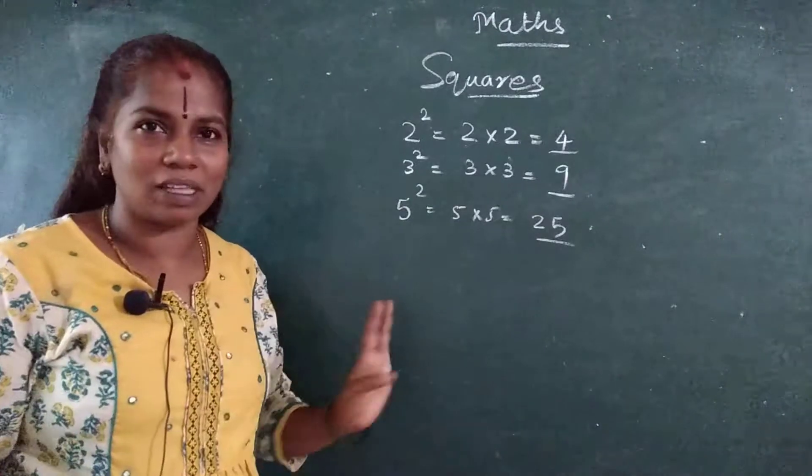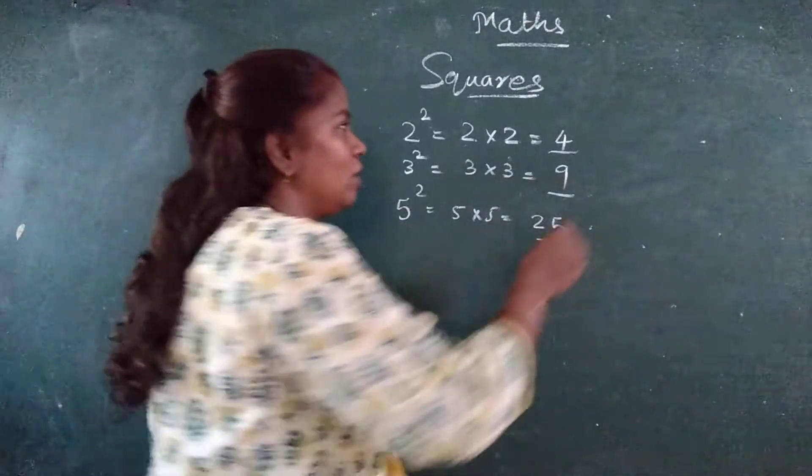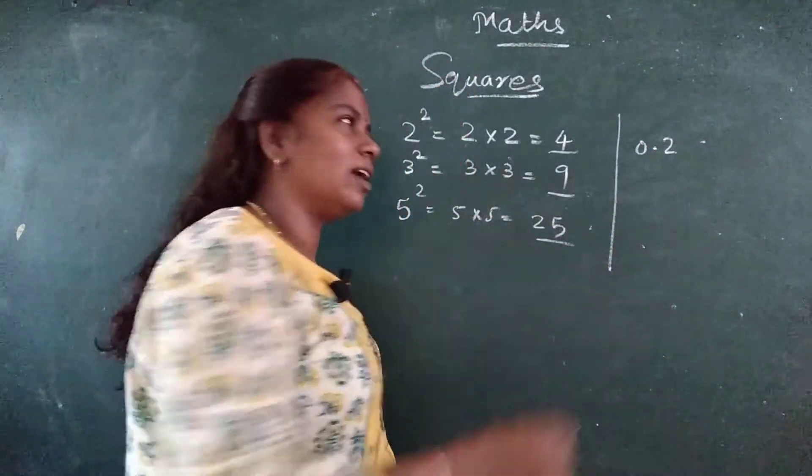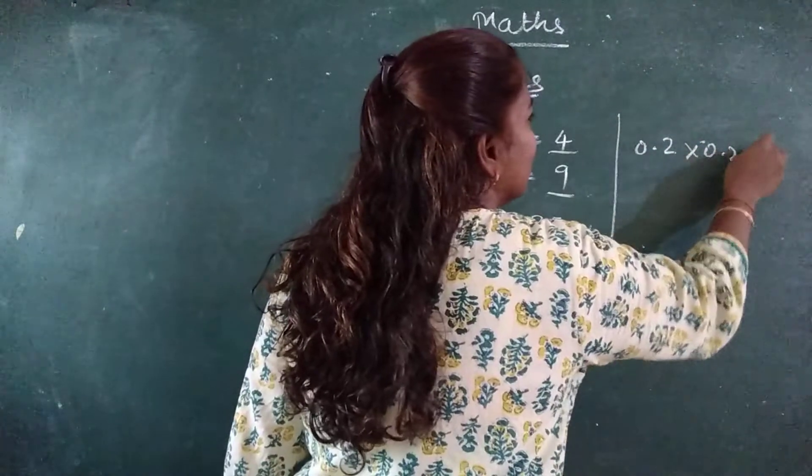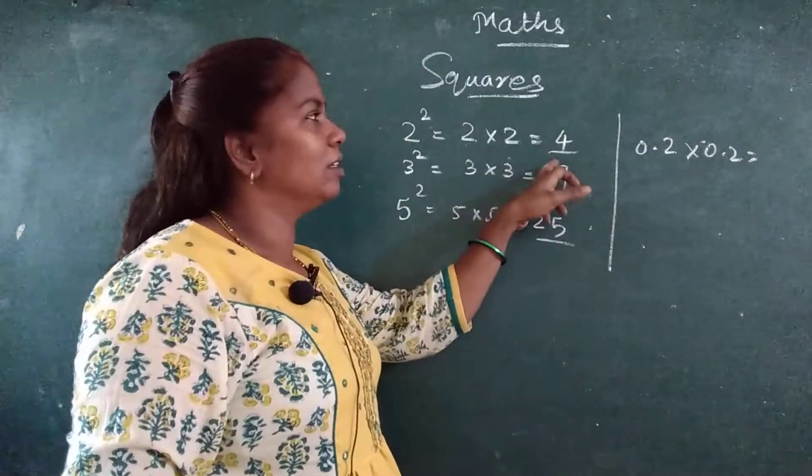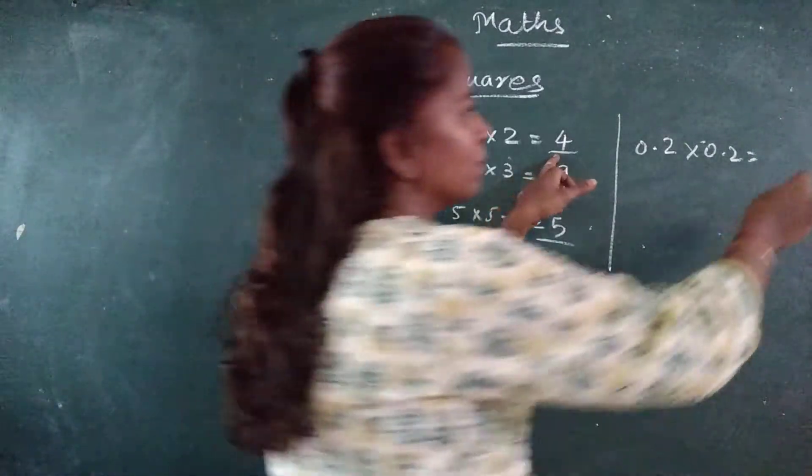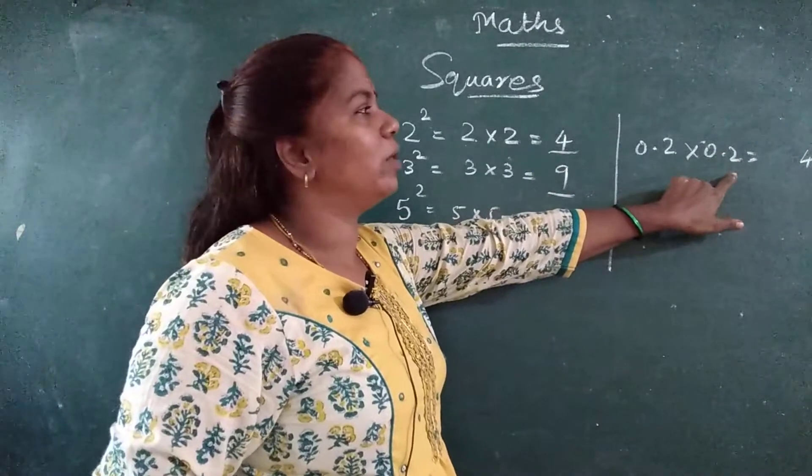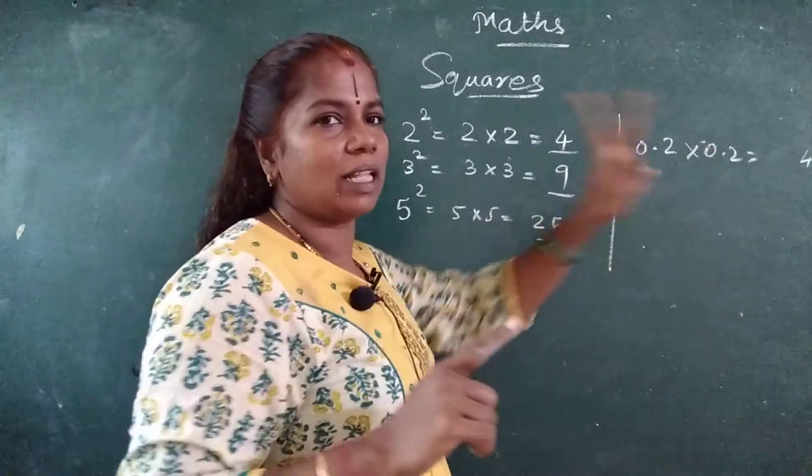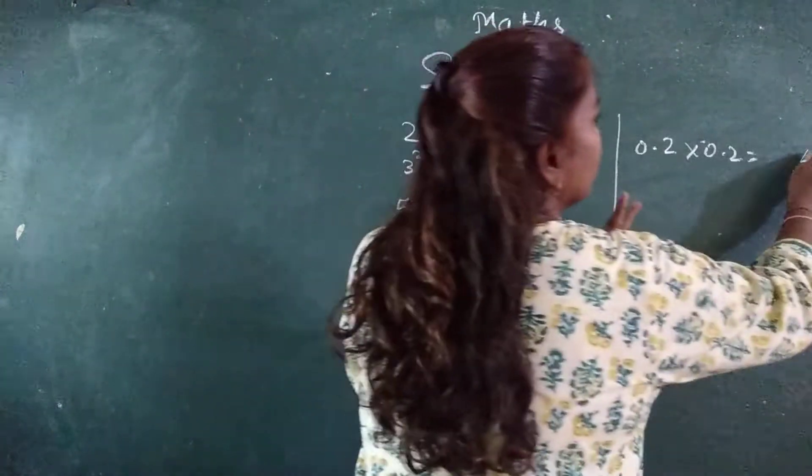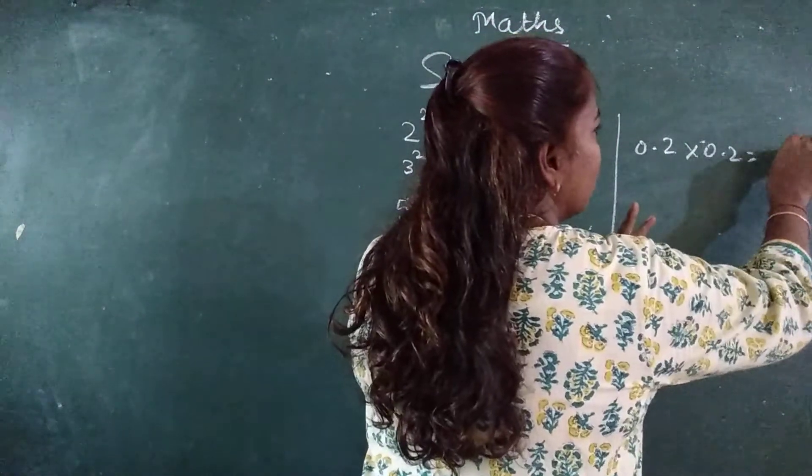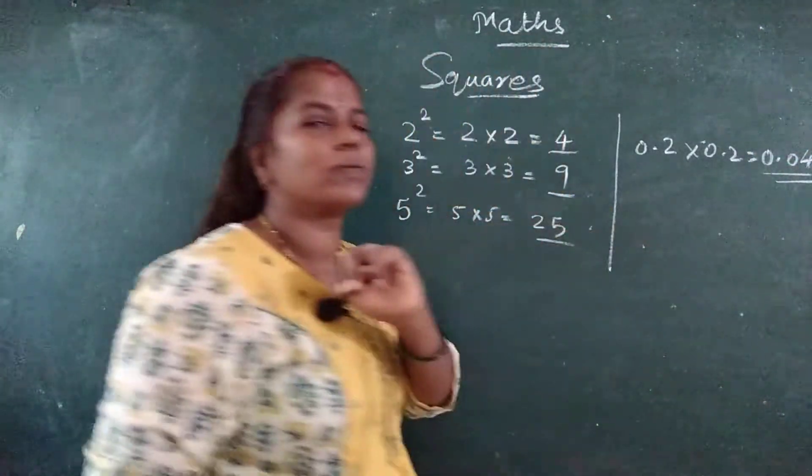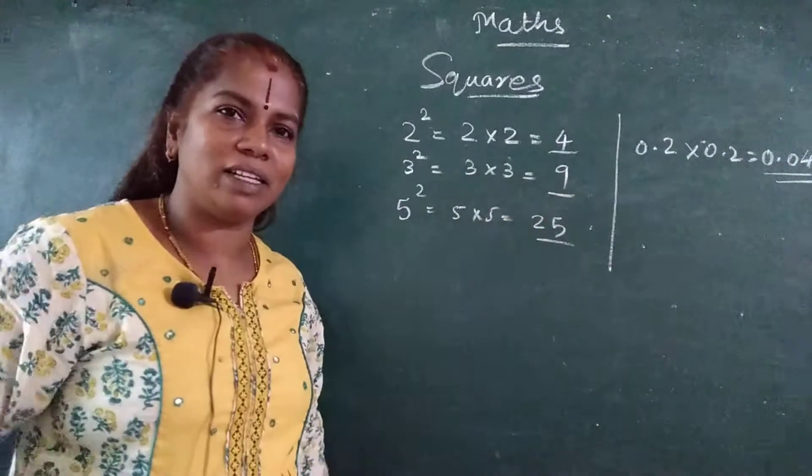Now suppose this number, simple number I have given. Now if I will give 0.2 into 0.2. How much? 2 2's are 4. How many points? After 0, one. Here after 0, one. That means 2. So this is one, so this is one, one more. 0.04. Got it?